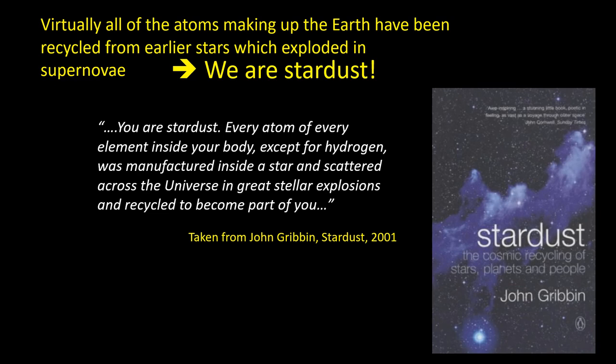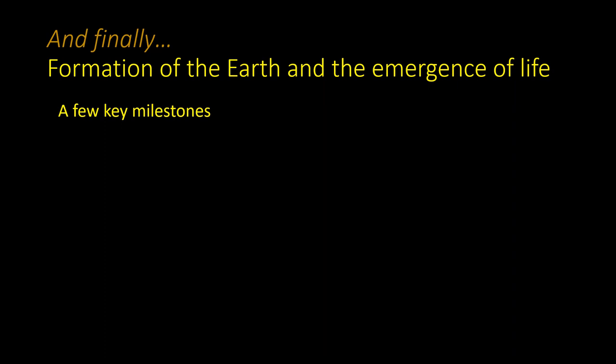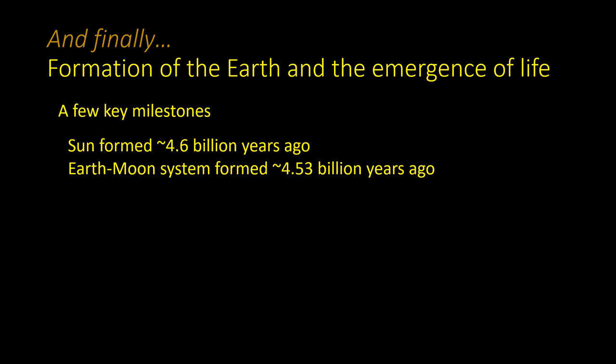Here's a few key milestones in the formation of the solar system, Earth, and life itself. The sun formed around 4.6 billion years ago. The Earth-Moon system a little bit later, probably around 4.53 billion years ago. The first simple life forms emerged soon after the formation of the Earth, probably around 4.3 billion years ago.